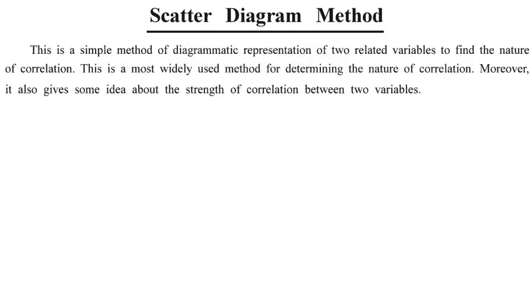The scatter diagram method is a diagrammatic representation of two related variables. We create linear graphs on graph paper to decide whether correlation is positive, negative, or otherwise. It gives us an idea about the nature of correlation but does not give the exact numerical value.